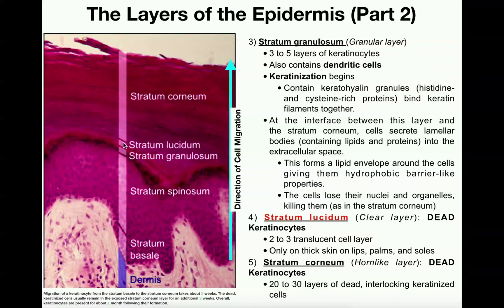The third layer is a really thin layer — only three to five layers of keratinocytes — and this is the stratum granulosum. It also contains dendritic cells, specifically Langerhans cells. This is the layer where we really consider the process of keratinization to begin.